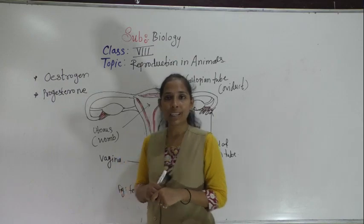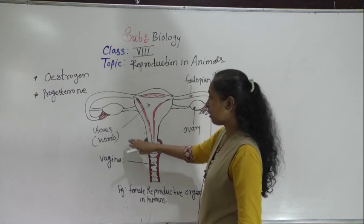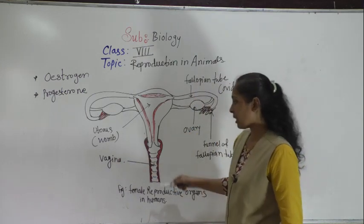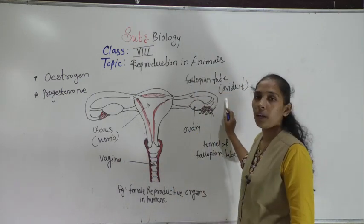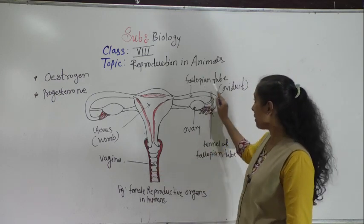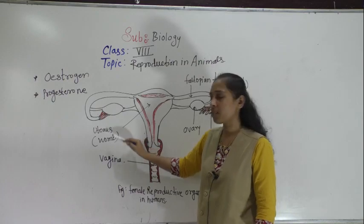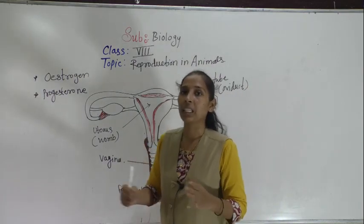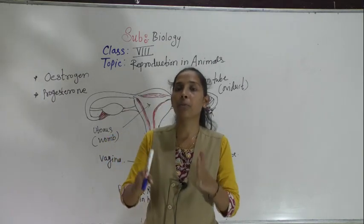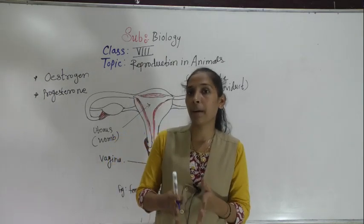The female reproductive organ mainly consists of a pair of ovaries, the uterus (also called the womb), the fallopian tube (also called the oviduct), and the vagina. All these are the parts of the female reproductive system in humans, and we are going to see each one in detail.